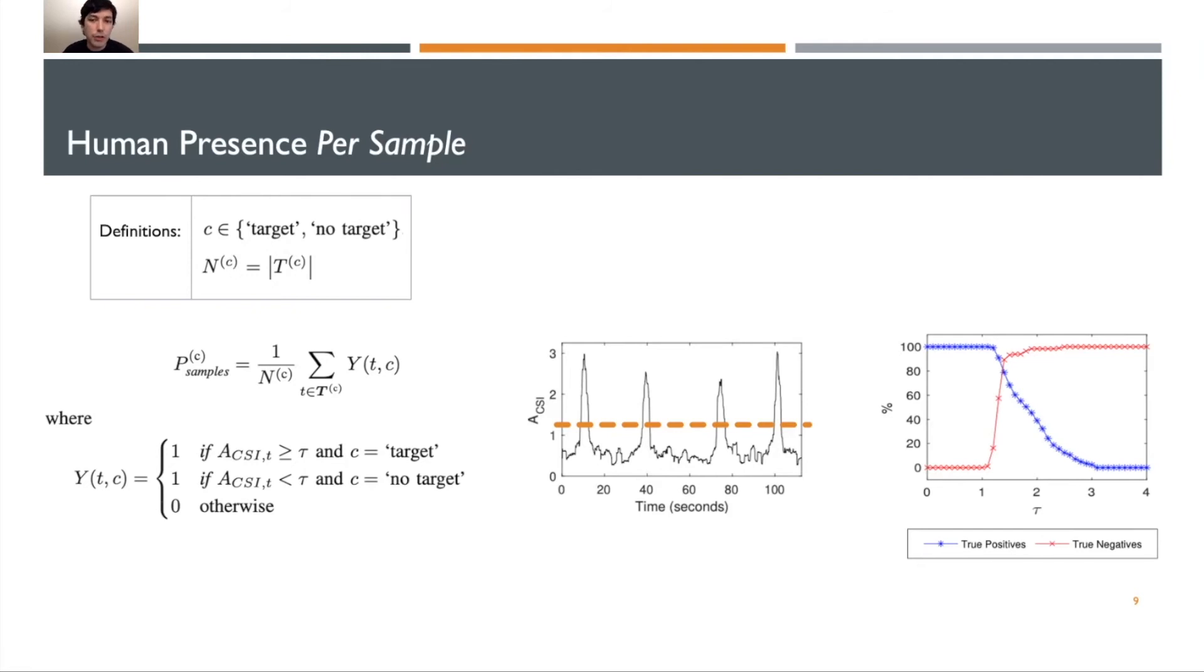Our first metric that we use to evaluate our system is PC samples. The goal is to identify the percentage of samples which are marked as a given class for a given threshold value, tau. We can see in this plot, as we increase tau, the percentage of true positives starts at 100% and slowly goes down to 0%.